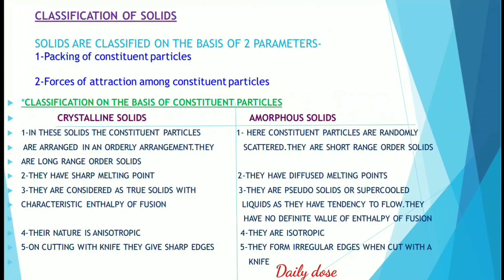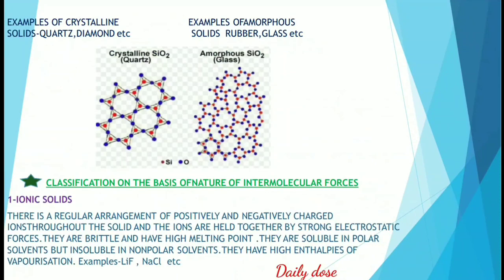When cut with a knife, crystalline solids give sharp edges, while amorphous solids form irregular edges. Examples of crystalline solids are quartz and diamond, and examples of amorphous solids are rubber and glass.